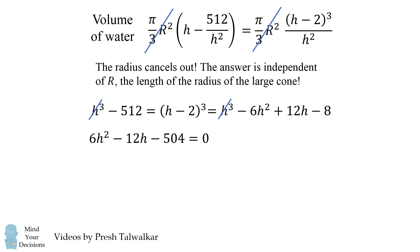6h squared minus 12h minus 504 is equal to 0. We divide by 6 to get h squared minus 2h minus 84 is equal to 0. Now we can use a quadratic formula and we're looking for a positive solution because the height of the cone has to be positive. So we get that h is equal to 1 plus the square root of 85 and this is approximately equal to 10.2 centimeters. And amazingly we figured out the height of the cone.